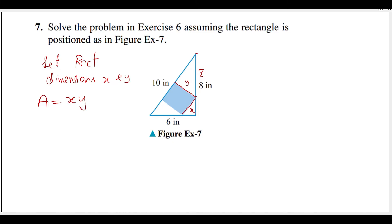We have a rectangle and a triangle. The other one is this — which similar triangle? This one. If I make it here, this is a right-angle triangle. This is a right-angle triangle. This is a right-angle triangle.